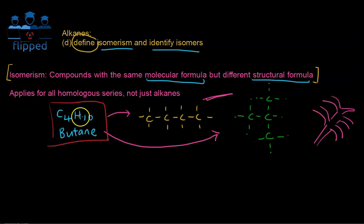There you have it, this is isomerism. They are the same compound, they have the same name butane C4H10, which is called molecular formula, but they look different in that they have different structural formula. This applies for all homologous series, not just alkanes.